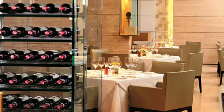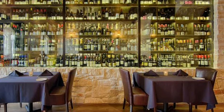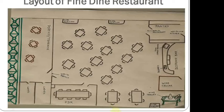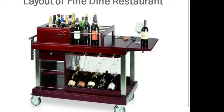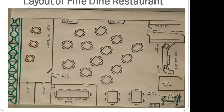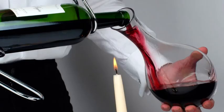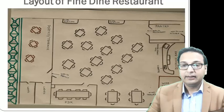The fine dining layout also includes a pantry exit and a wine cellar, which is typically not found in coffee shops or casual dining restaurants. In fine dining, guests spend more money and seek an experience — they usually order wines paired with food. The wine cellar display adds to the ambience and value of the restaurant. There is also a wine trolley with wine, decanter, and accessories, which can be taken to the guest's table for wine decanting. Decanting will be discussed in detail in a future lecture.